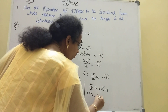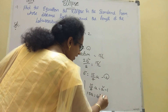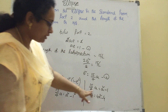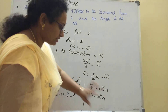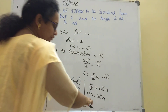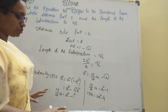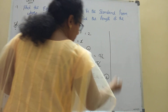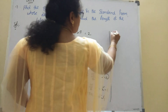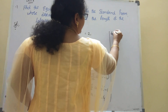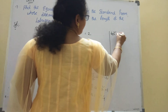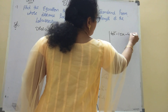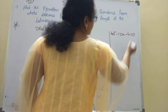This gives us 15a = 4a² − 4. Rearranging, we get the quadratic equation: 4a² − 15a − 4 = 0.